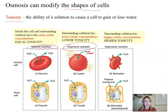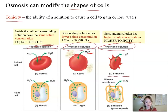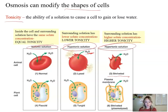If we take a cell and place it in a hypertonic solution, water is going to leave the cell and the cell is going to shrivel — in other words, we're going to dehydrate it. This happens because the surrounding solution has higher solute concentration, so it has less water, and therefore water moves out of the cell.